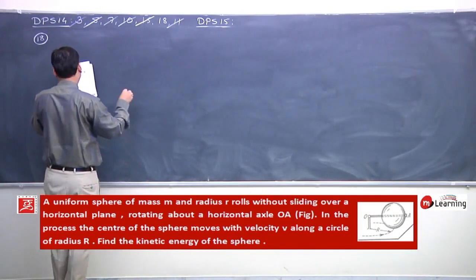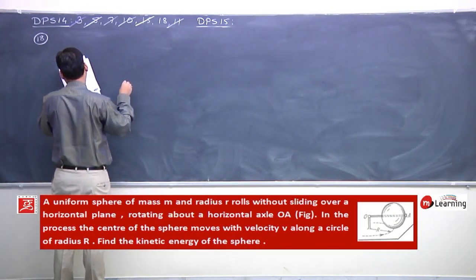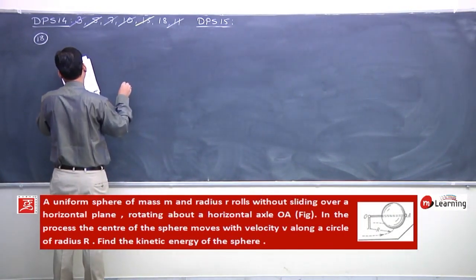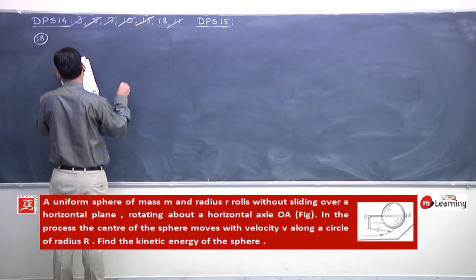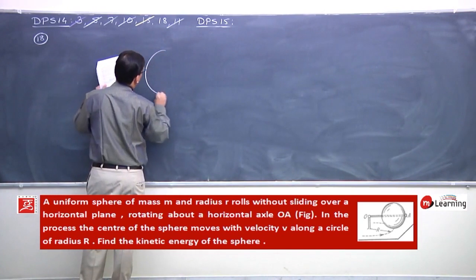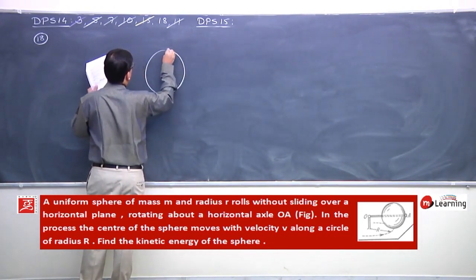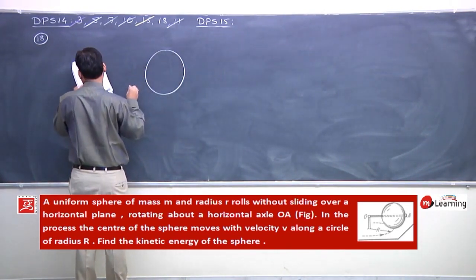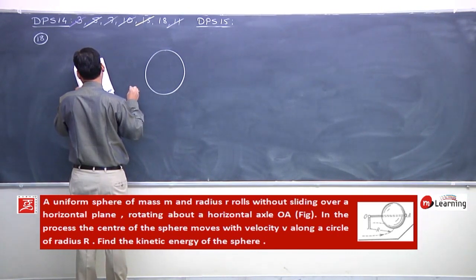Just have a look. A uniform sphere of mass m and radius r rolled without sliding over a horizontal plane, rotating about an axle. In the present, center of sphere moves with velocity v about a certain r.